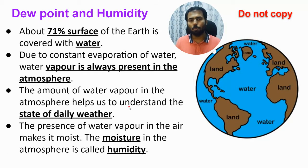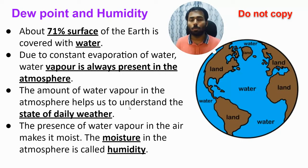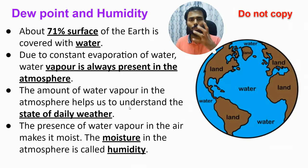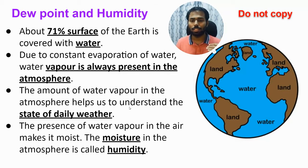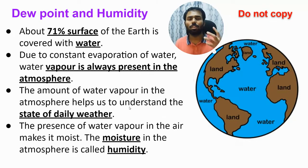For example, people often say the climate of Mumbai is very humid. What do they mean? That there is a lot of water vapor in the air, because Mumbai is very near to an ocean. Being near the ocean means there is a lot of water content, a lot of moisture, a lot of water vapor in the air.